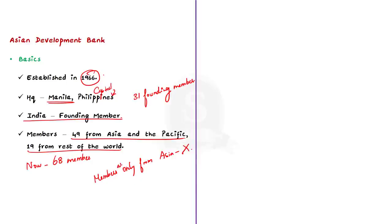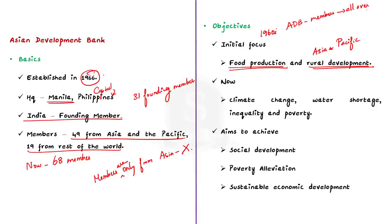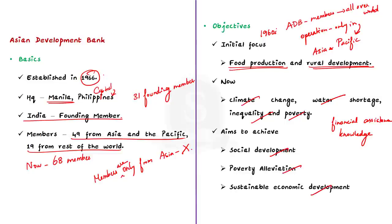Let us see the objectives of the Asian Development Bank. During the 1960s when it was established, ADB focused much of its assistance on food production and rural development in the Asia and Pacific region. While ADB has members from all over the world, its operations are mainly in Asia and Pacific. Currently, the objectives of ADB have diversified. Issues like climate change, water security, inequality, and poverty are addressed when international efforts are properly coordinated. ADB provides its member countries with financial assistance, knowledge and expertise to tackle these problems, aiming to ensure social development, reduction of poverty, and attainment of sustainable economic development.